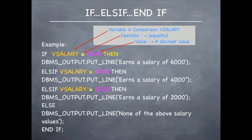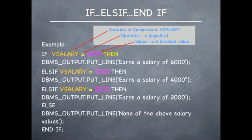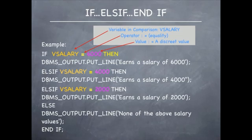If the next check is true, the string to display is 'earns a salary of 4000'. After executing the action, the program will continue with the statement following the entire if construct. If that is also false, another check is performed. If all checks are false, you don't have any more checks to perform. However, you still want to take care of the situation where none of the conditions were met. This is done with the else, which will display the string 'none of the above salary values'.